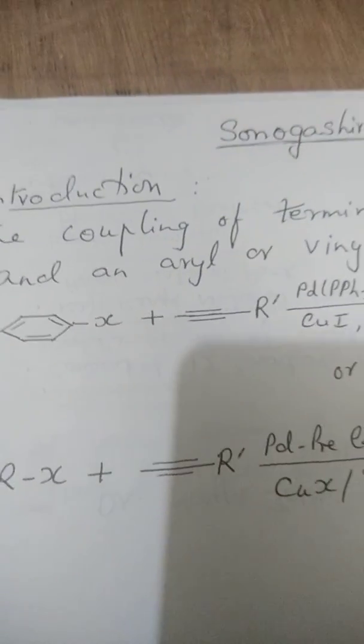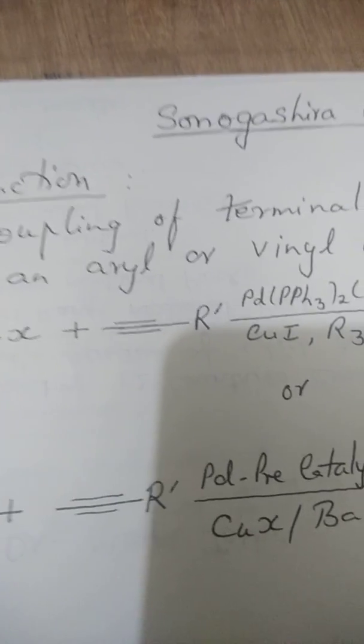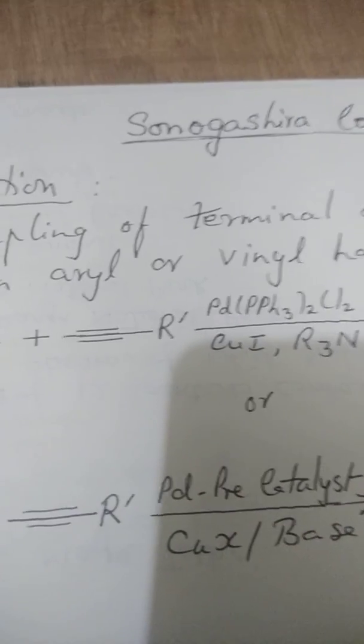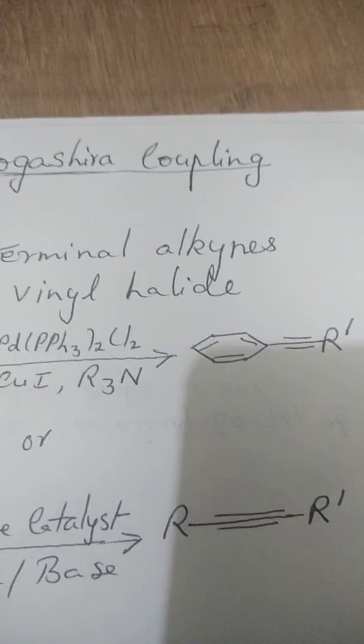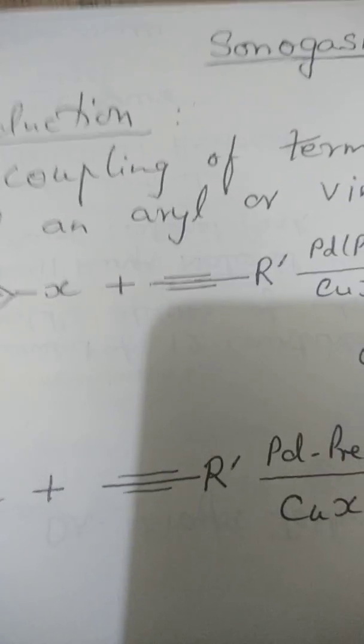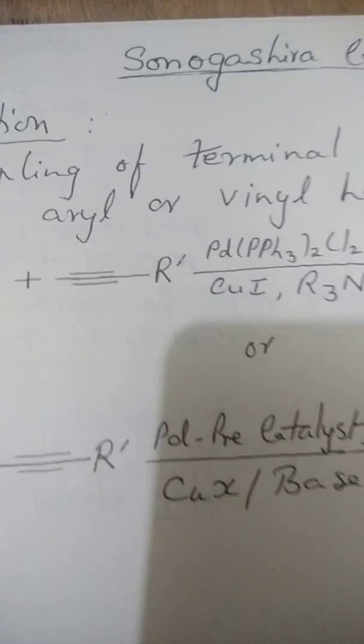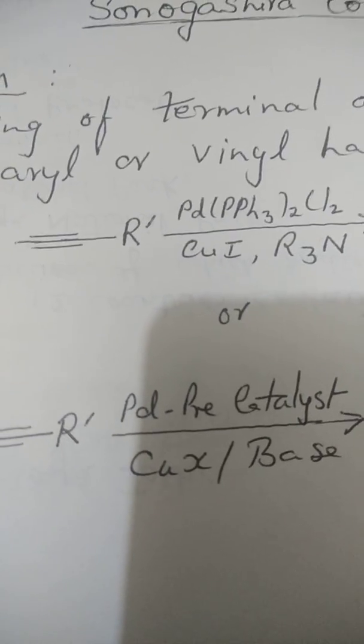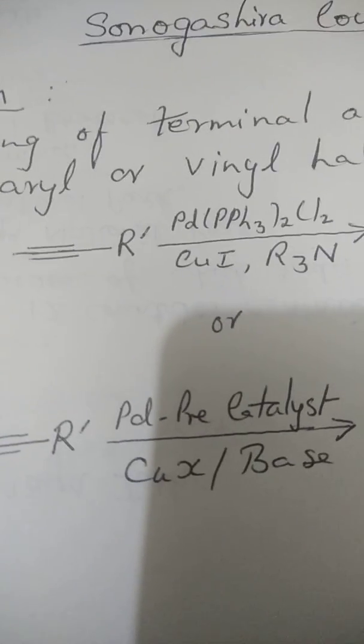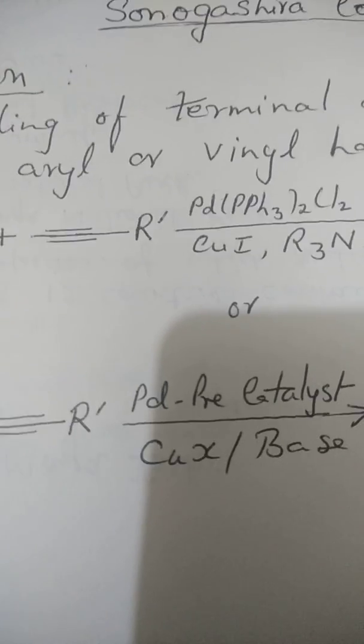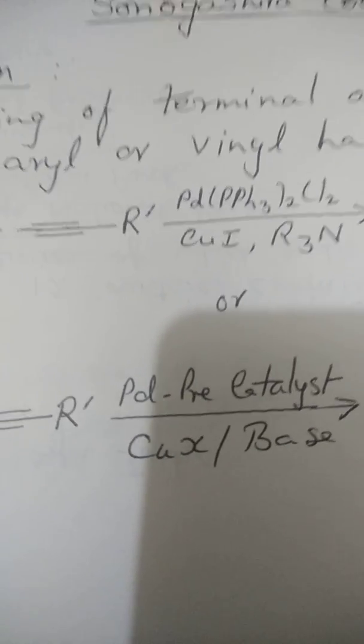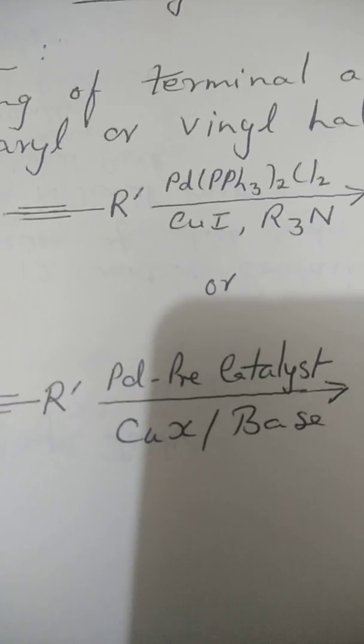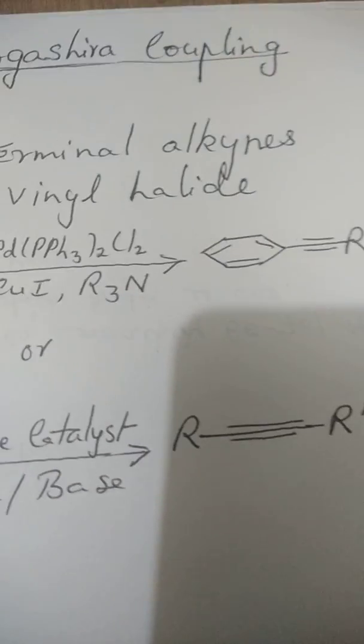Here goes the mechanism. As can be seen, the aryl halide together with the alkyne in the presence of the palladium catalyst, copper iodide, trialkylamine, giving rise to this carbon-carbon coupled product. Or we can generalize it writing it as R-X with the alkyne and we can designate the catalyst as a palladium pre-catalyst because palladium in the zero valent state is not stable in these conditions. So generally it is taken in the form of Pd(II) and then from this the active catalyst is obtained.